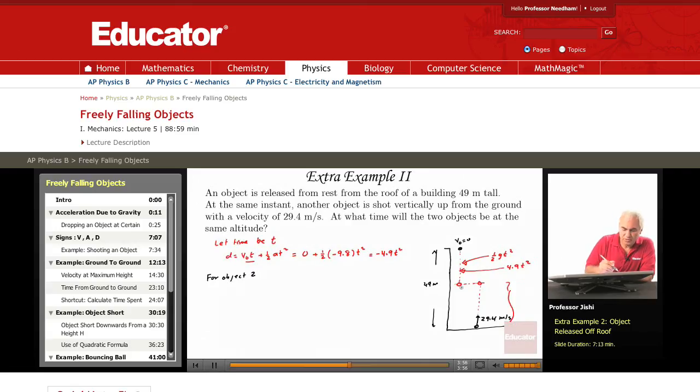the displacement for object 2 is again V0 T plus half A T squared and now V0 is V0 for object 2. So, this is 29.4 T and A is minus 9.8 so, that's minus 4.9 T squared. This is a distance, this is a positive quantity, the displacement is positive and so, this represents a distance that the object number 2 rises.